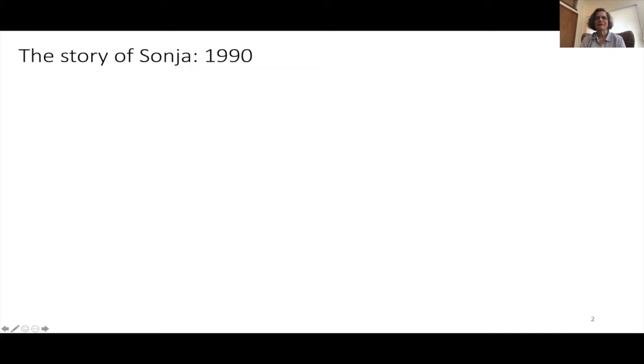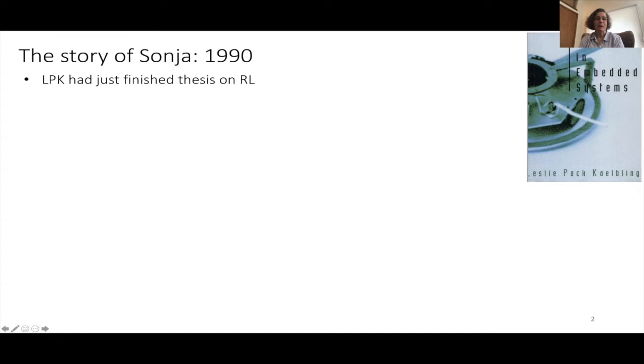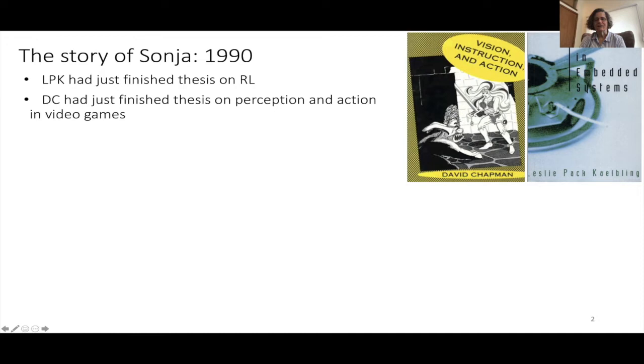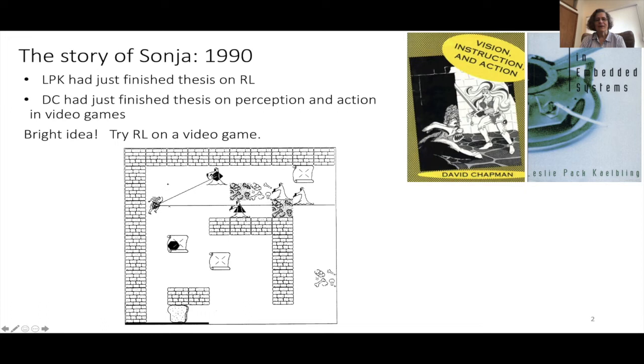So in 1990, I had my first real serious brush with partial observability. I had just finished my thesis on reinforcement learning, and a friend, David Chapman, had just finished a thesis on using perception and action to write controllers for video games. We thought a cool thing to do would be to take my reinforcement learning algorithms and run them on his video game called Amazon, and the main character was called Sonja.